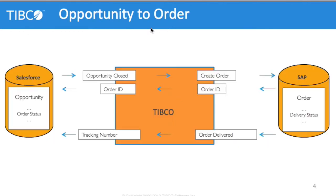In our demo, we'll first watch an opportunity in Salesforce automatically get converted into an order in SAP, and then updated when the order is scheduled for delivery. First, we'll close an open opportunity in Salesforce. The opportunity will automatically be sent to SAP to create an order. After the order is generated in SAP, its order number will automatically be sent to Salesforce. Later, when the order is scheduled for delivery, the opportunity in Salesforce will be updated with the tracking number.